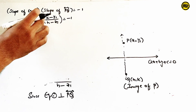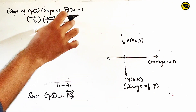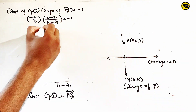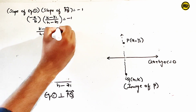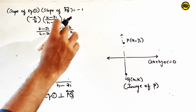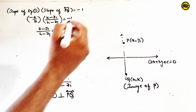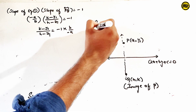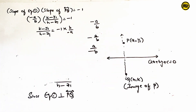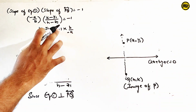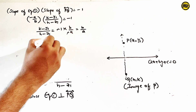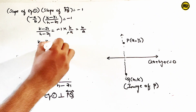So minus a by b multiplied by k minus y1 by h minus x1 equals minus 1. Taking the reciprocal, k minus y1 by h minus x1 equals b by a. By cross multiplication, a into k minus y1 equals b into h minus x1.